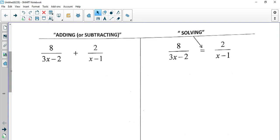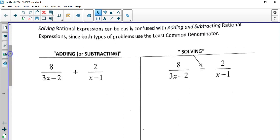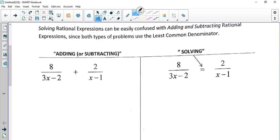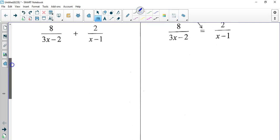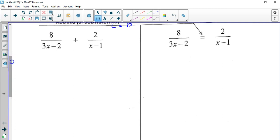We need to find the LCD for both. That's very important. You're going to find the LCD for both. So the LCD for this one that we're adding is going to be 3x minus 2 times x minus 1.